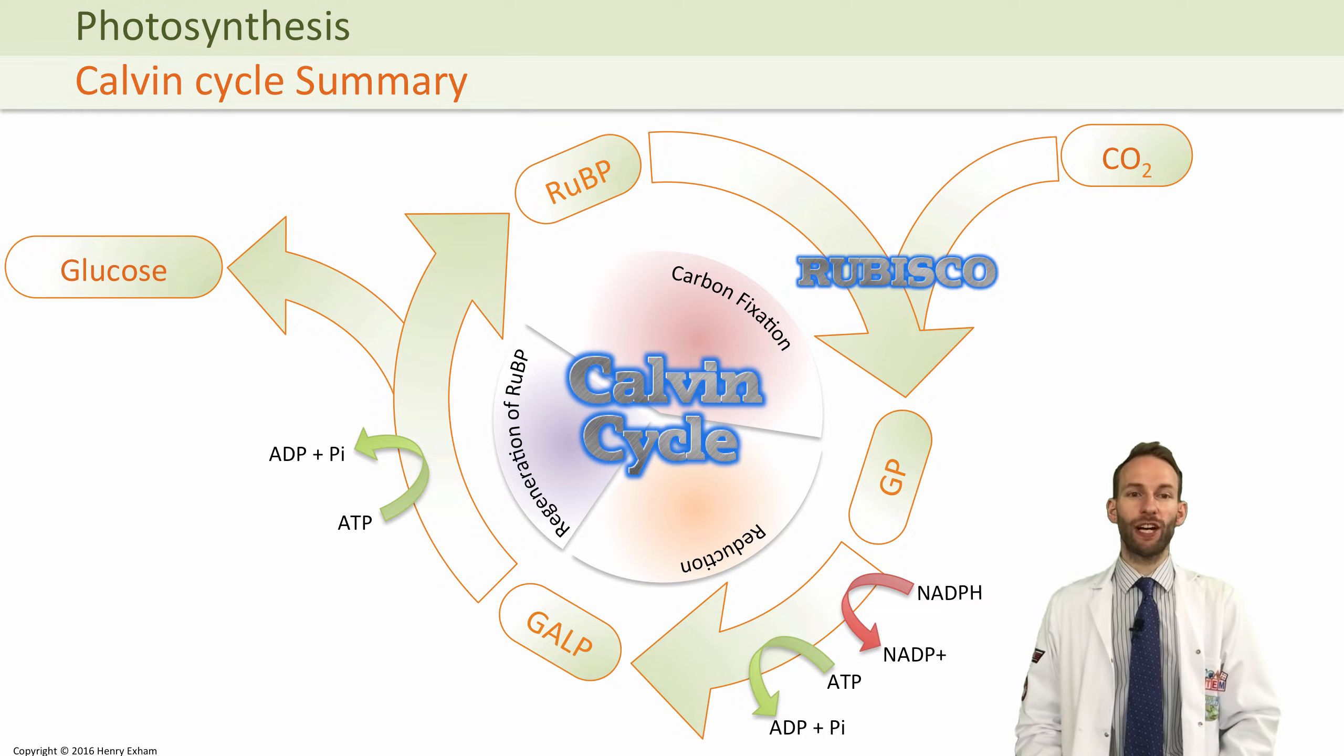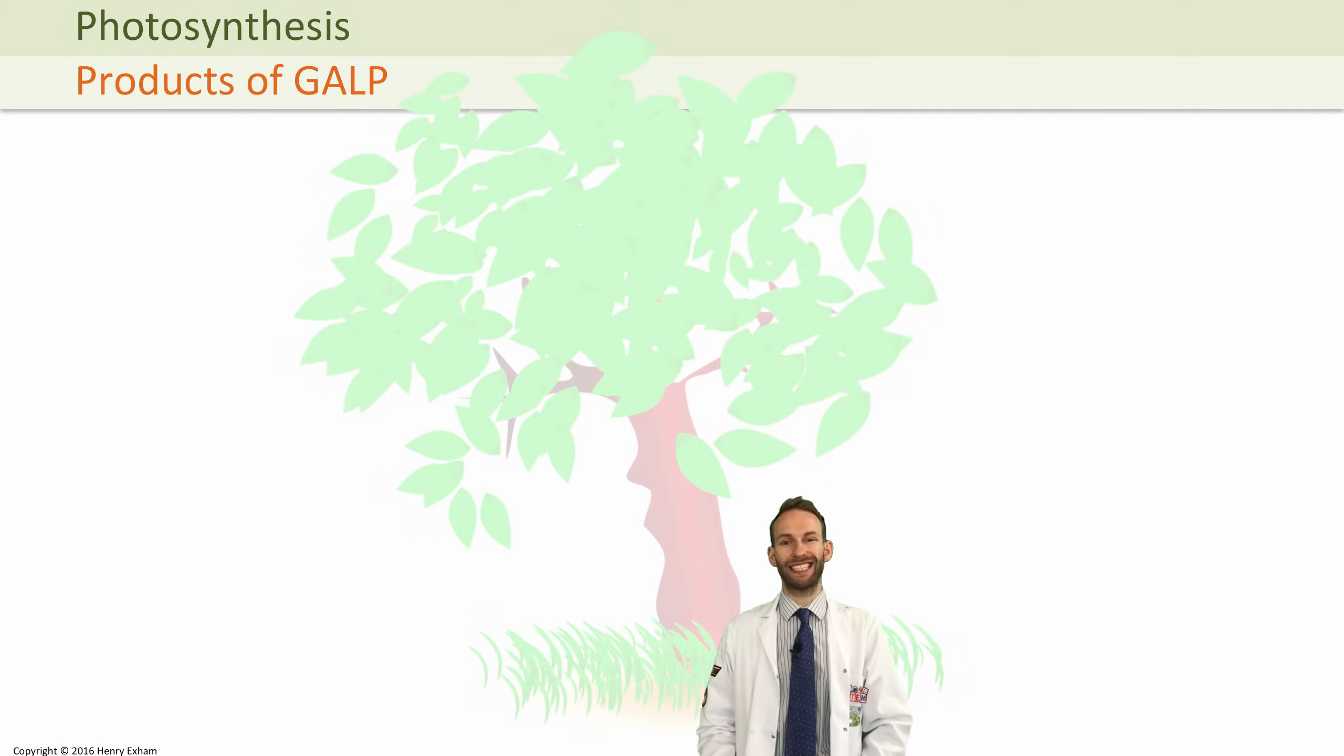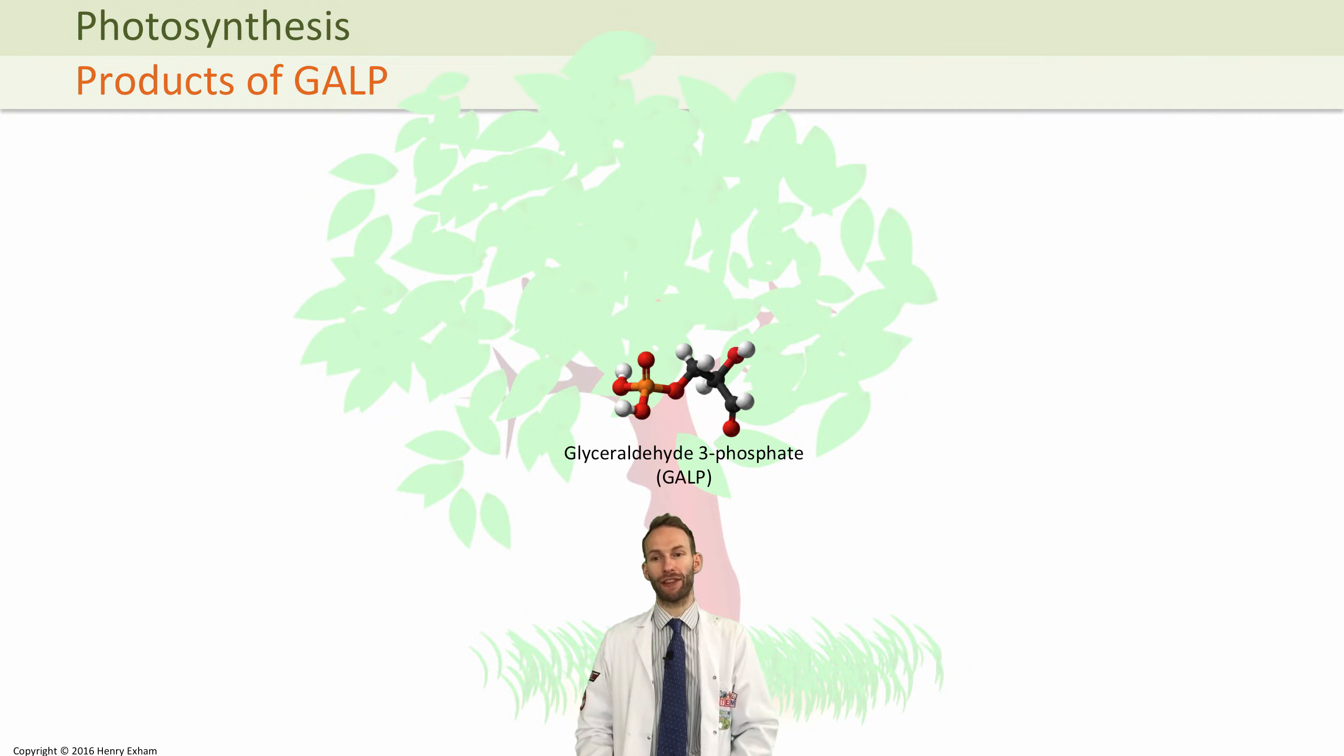Actually, GALP is the primary end product of photosynthesis and is the key molecule for making everything else needed by the plant. Some of it goes to glucose, but a lot of GALP gets turned into other things that the plant needs.